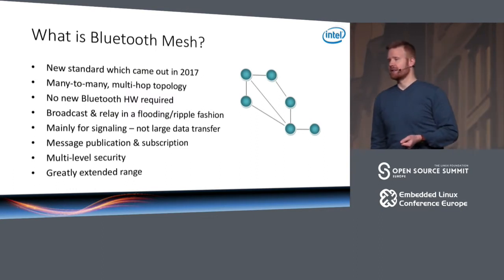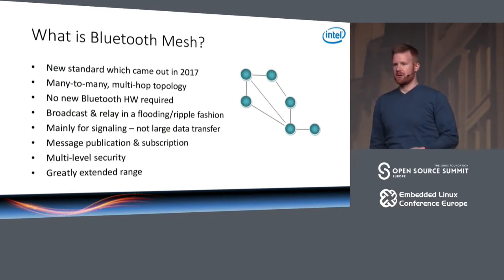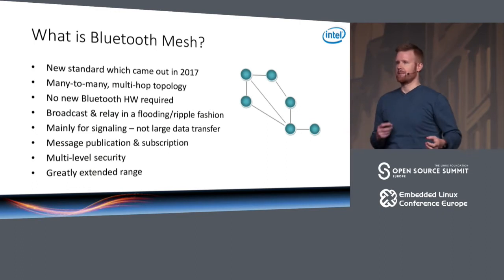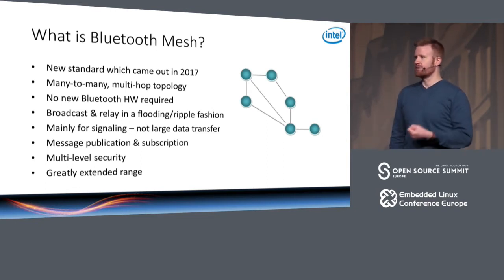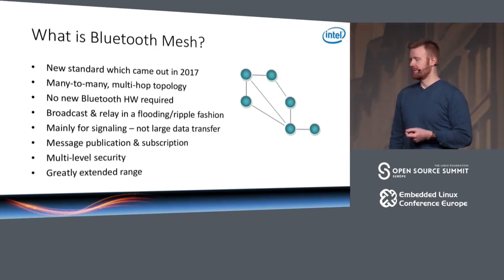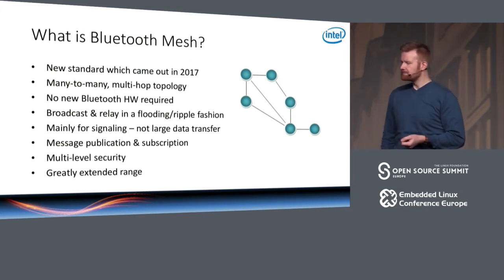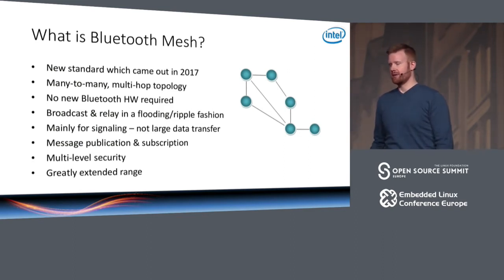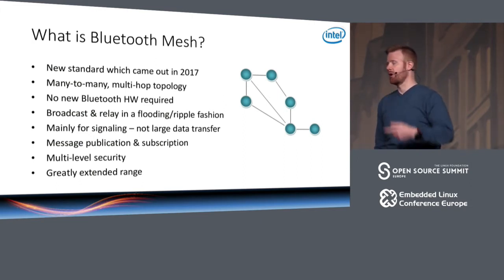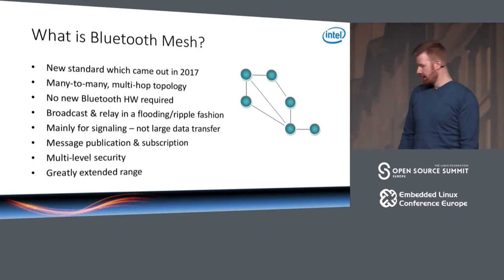You can do large data transfer with Bluetooth Mesh, but the transfer speed won't be great. Message publication and subscription is a fundamental aspect of Mesh — it's a way of organizing who's sending messages and who's receiving them in a Bluetooth Mesh network. Security is built into the core of Bluetooth Mesh at many different levels and layers. One of the biggest benefits of Mesh is that you get way more range than traditional Bluetooth, which is around 10 meters, whereas with Bluetooth Mesh's multiple hops, you can get kilometers of range for a single message.